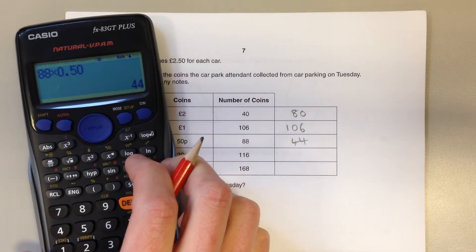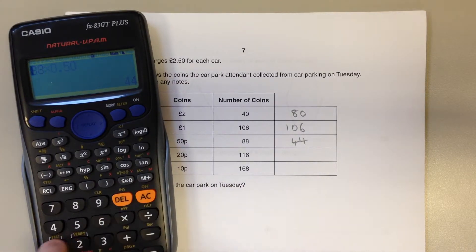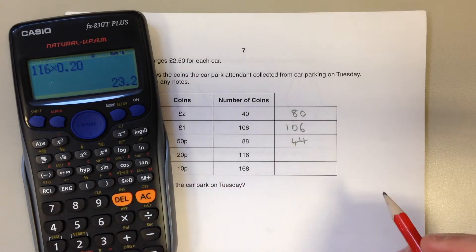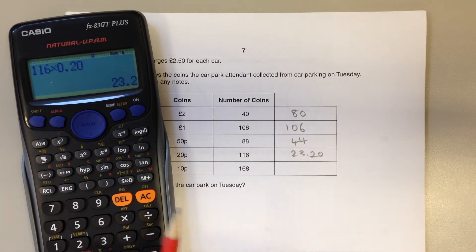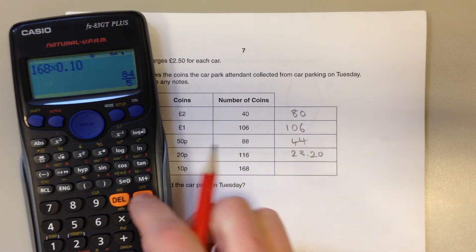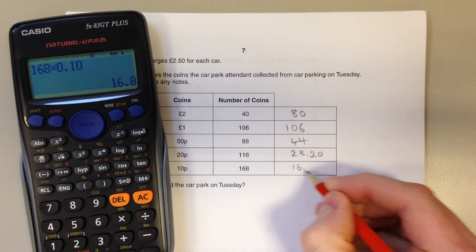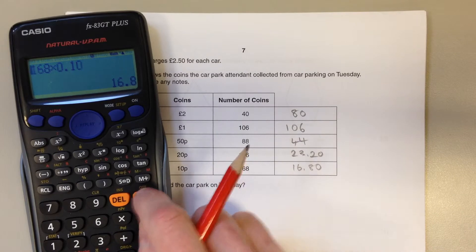Then we've got 116 lots of 20p, which is £23.20. And then finally, 168 lots of 10 pence is £16.80. Add them all up.